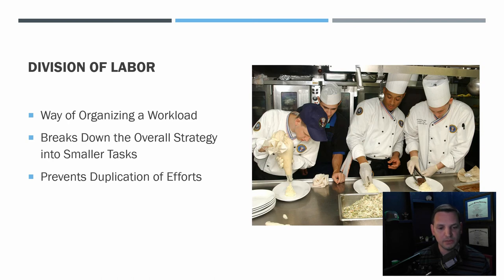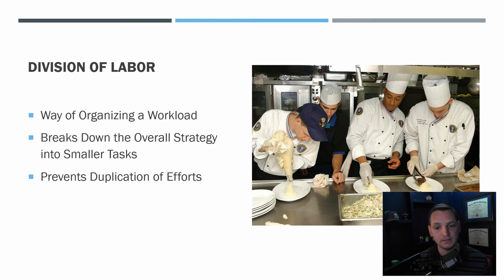Division of labor is a way of organizing a workload that breaks down the overall strategy into smaller tasks and prevents duplication of efforts. The best example is an assembly line — or a food line where one person does mashed potatoes, one does a side, one does a meat. This ensures nobody is duplicating efforts and people aren't stepping over each other. That's why restaurants use this procedure and why fast food restaurants are successful.